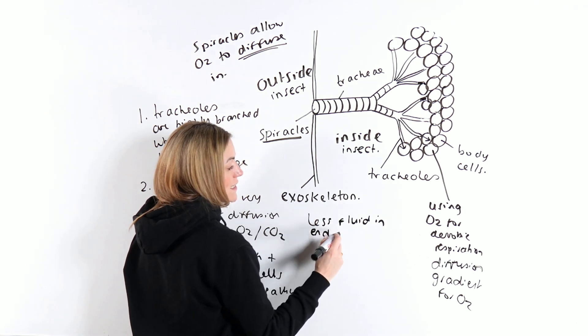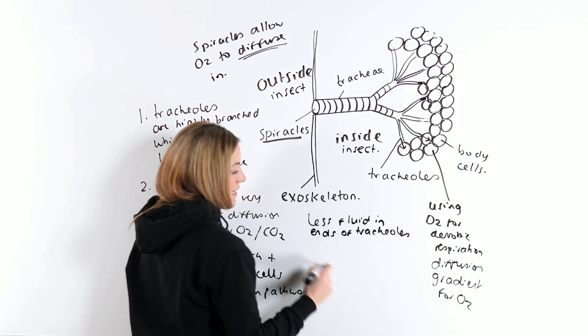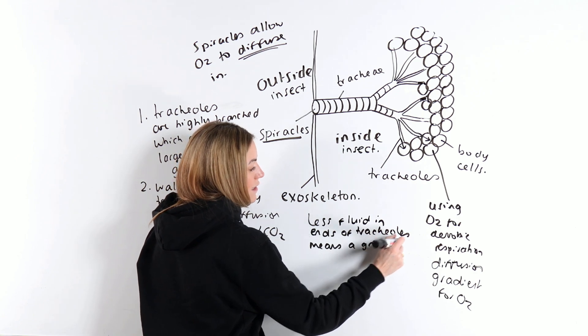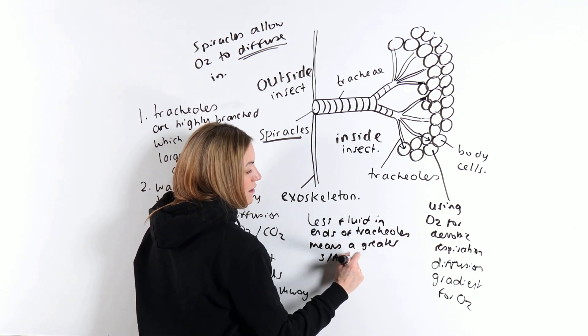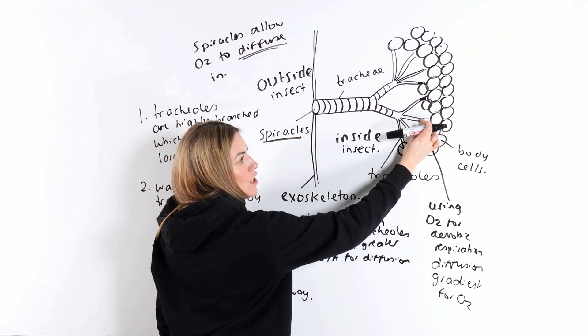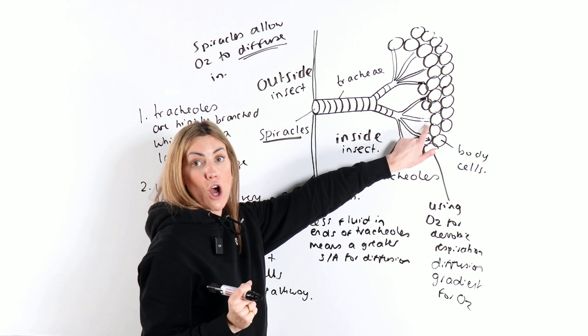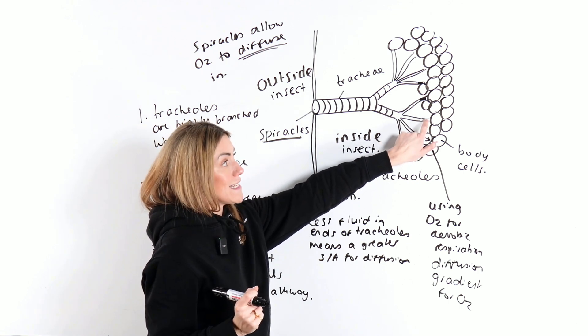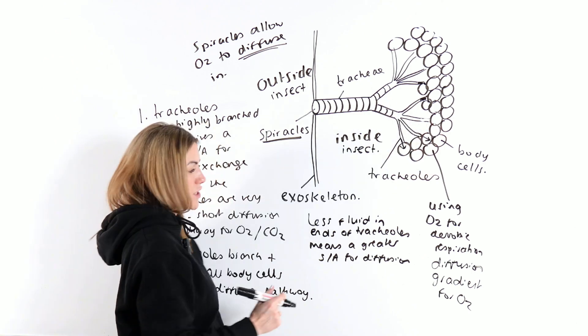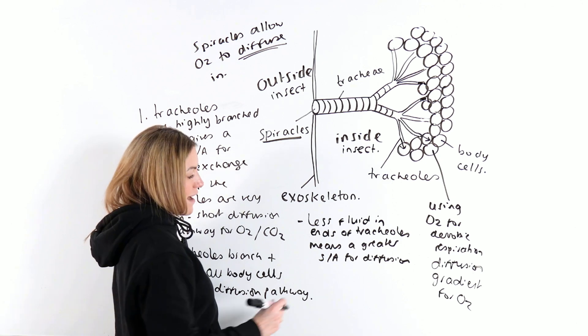If the amount of fluid in the ends of the tracheoles is reduced, there's a couple of things we can say. Less fluid in the ends of the tracheoles means a greater surface area for diffusion. Because there's less fluid, the air with the oxygen in is more exposed to the wall of the tracheole as opposed to that fluid. So it's easier for it to diffuse across the wall of the tracheole and into the body cells.